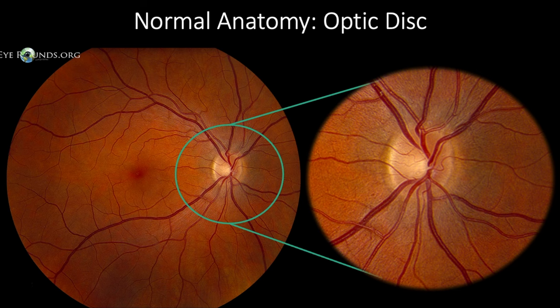Within the disc there should be a physiological cup. Although quite variable, the cup is typically less than 0.6 times the diameter of the disc. This comparison in size is referred to as the cup-to-disc ratio, which can be measured by dividing the vertical height of the cup over the vertical height of the disc. In this case our cup-to-disc ratio is approximately 0.4.